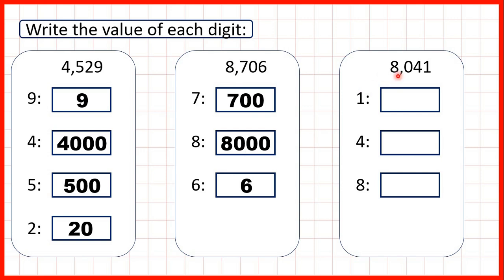Now we have the number 8041. The 1 is in our ones place value, it's on the end, so that just stands for 1. The 4 is in the tens, so that's 40. And the 8 is in the thousands place value, so that represents 8000.